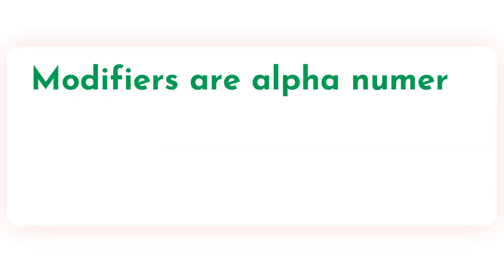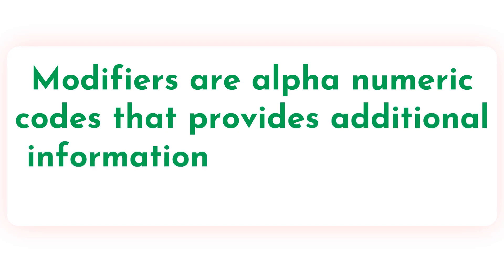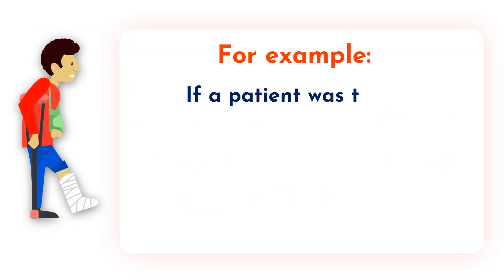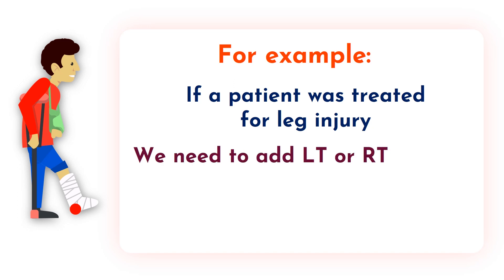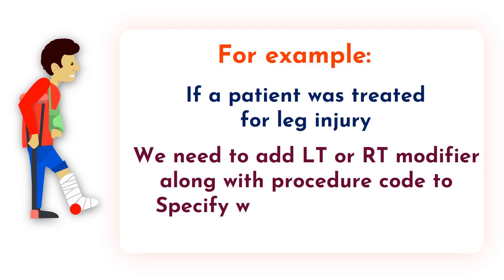Modifiers are alphanumeric codes that provide additional information about the procedure code we bill. For example, if a patient was treated for a leg injury, we need to add LT or RT modifier along with the procedure code to specify which leg was treated.